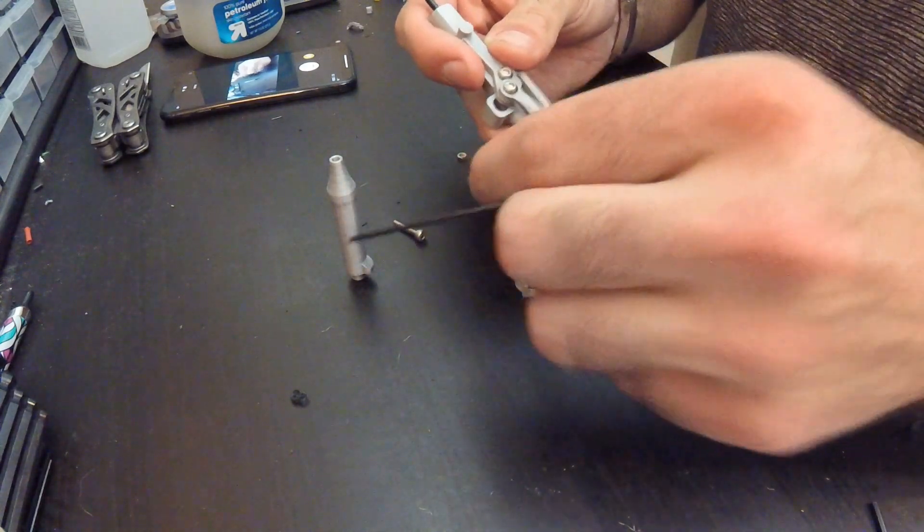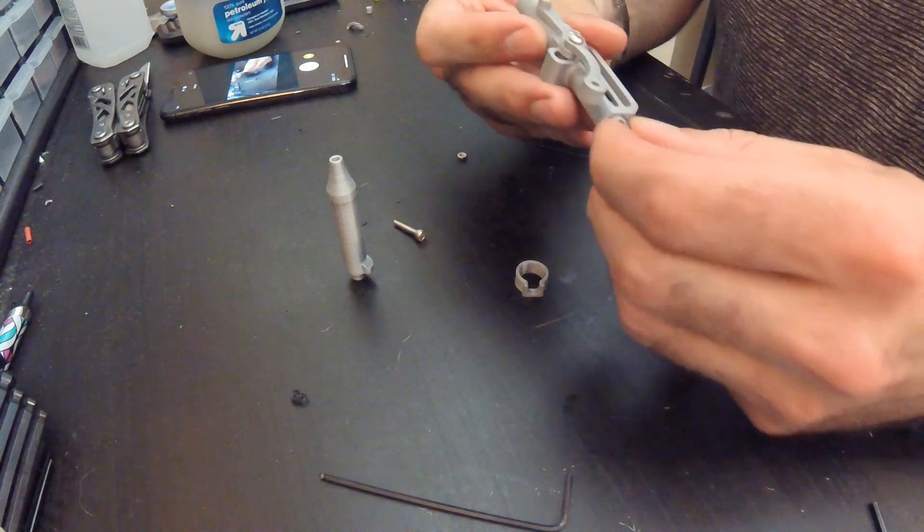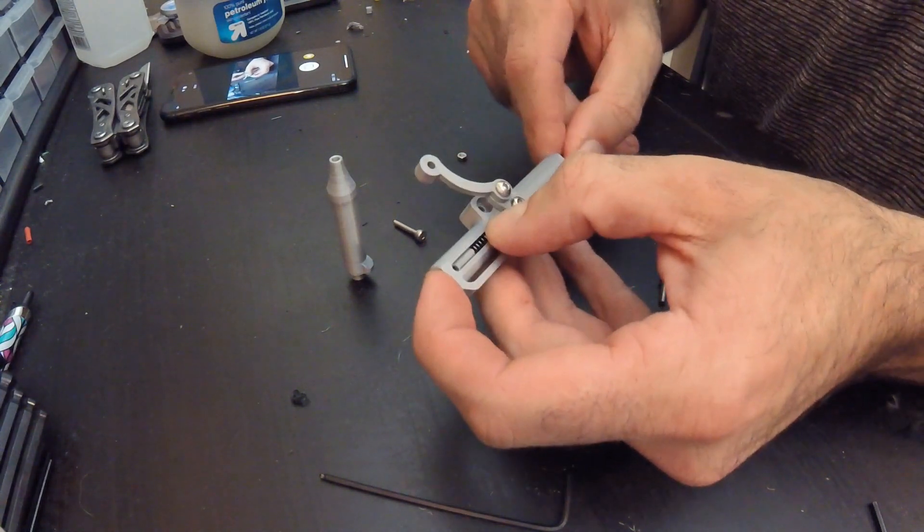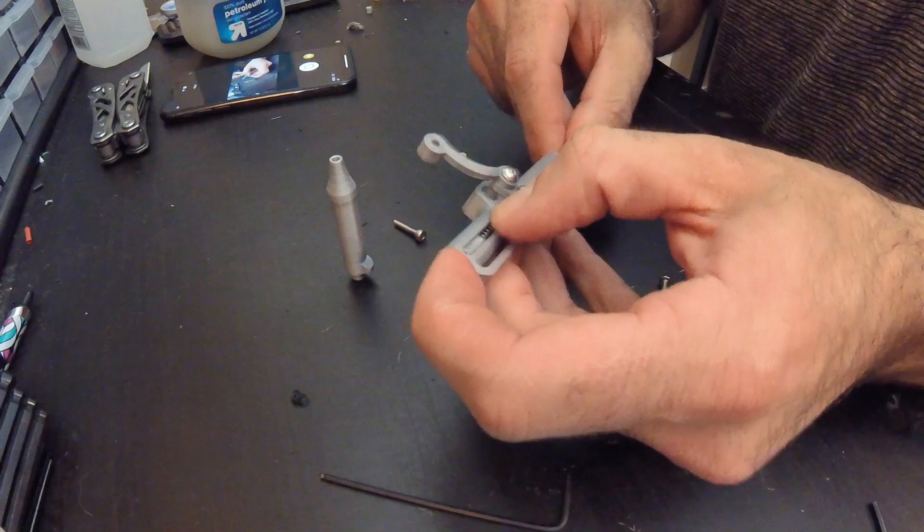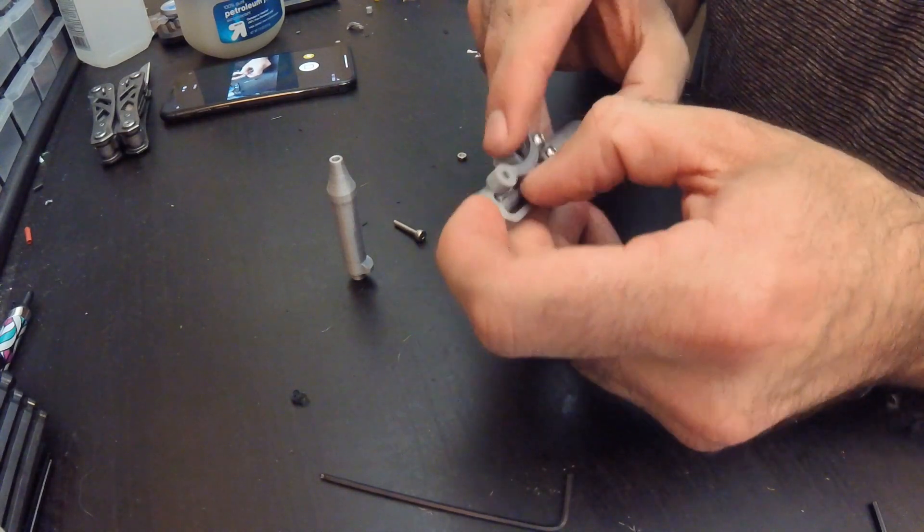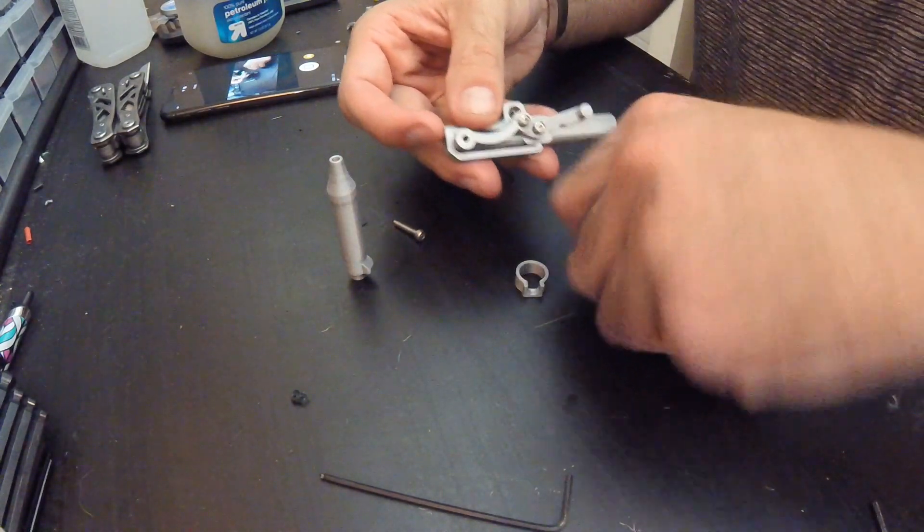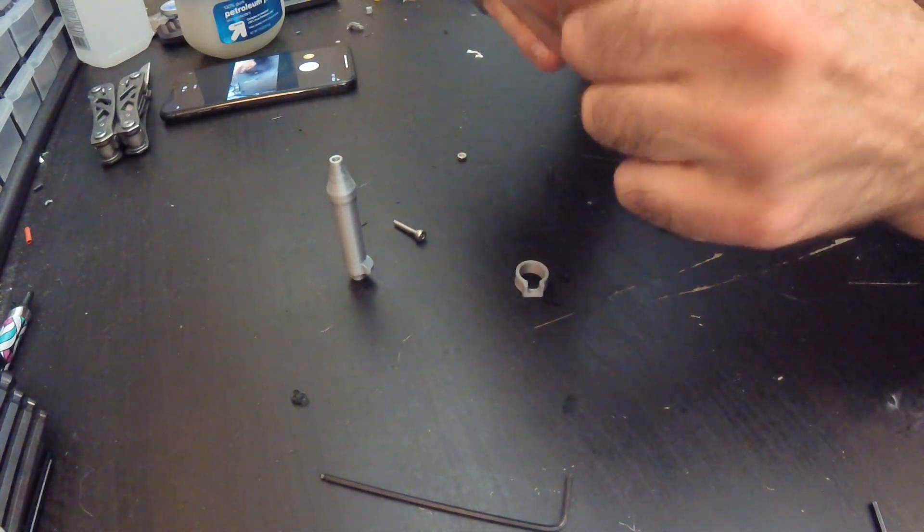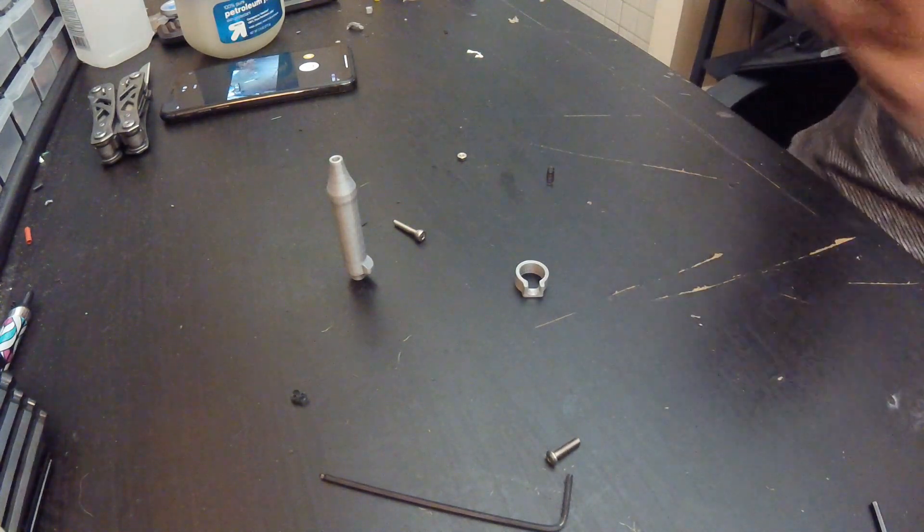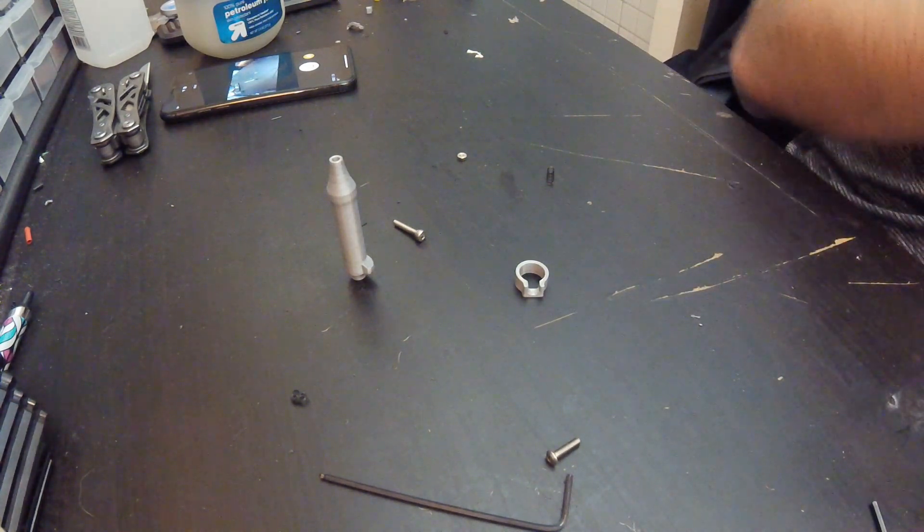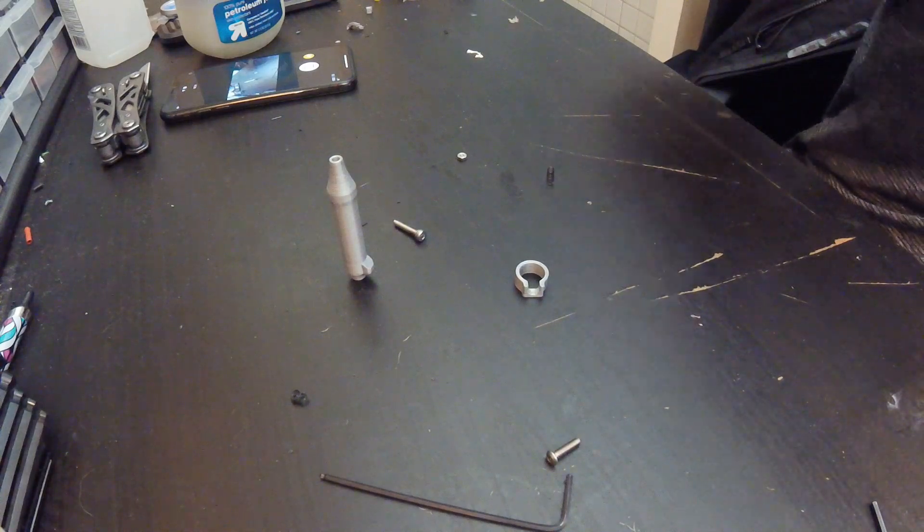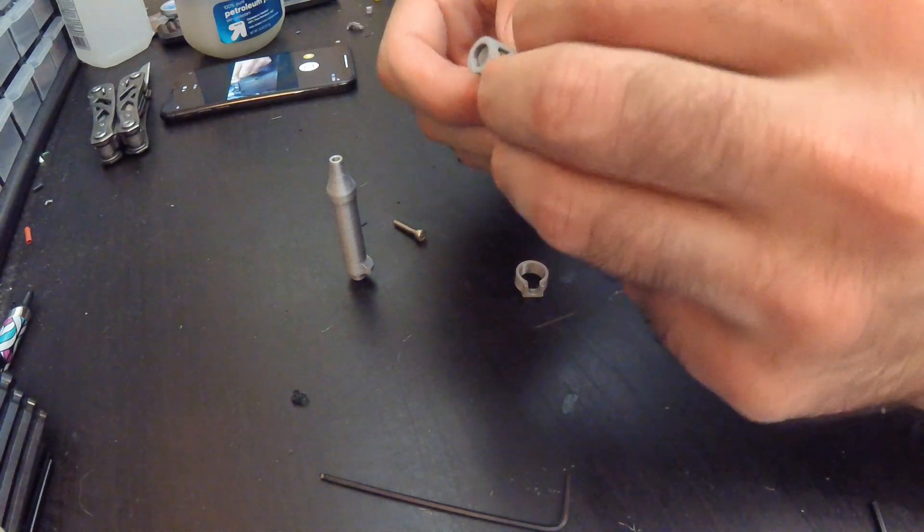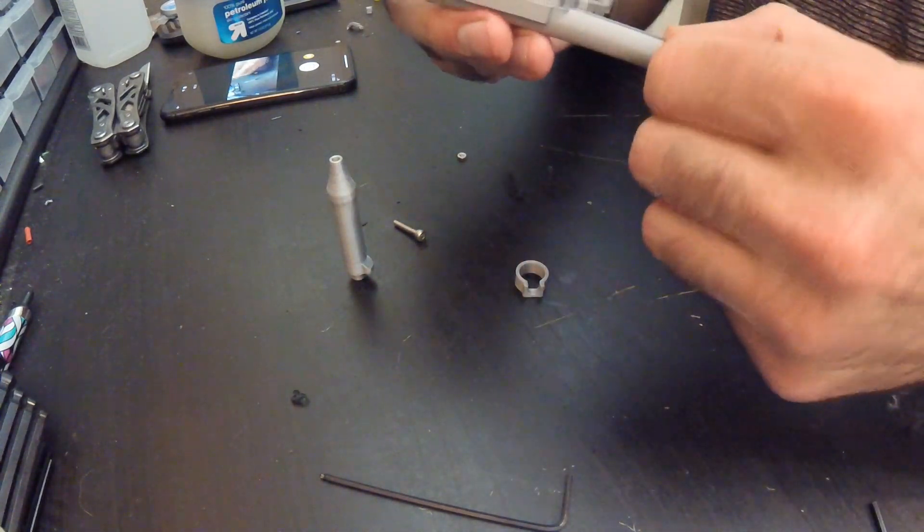Next we push the plunger down and line up the linkages, and then sink another M3 screw through. This one will tighten. Printer's a little bit off dimensionally, just drilled it out a hair. There we go. So line it all up.